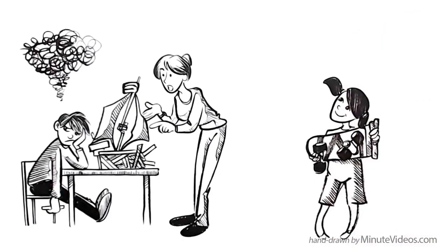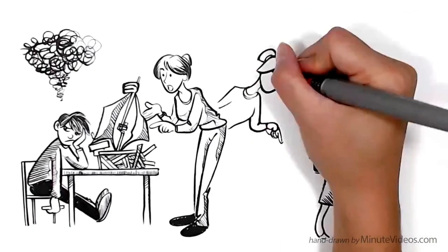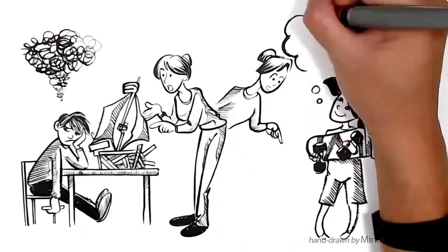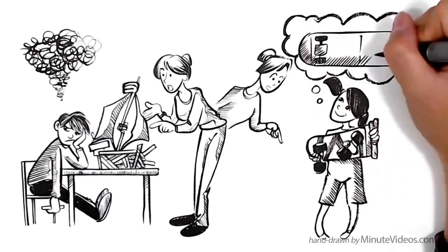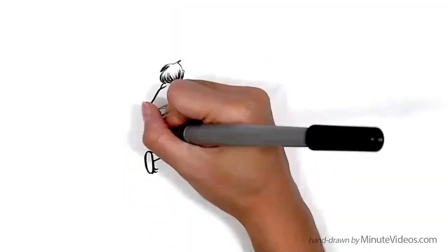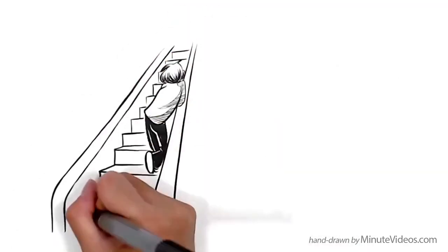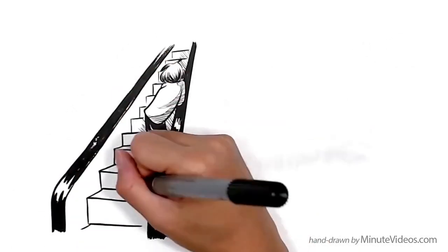Jay always takes the easy road. For example, he likes escalators and hates to take the stairs. When he is practicing the guitar, he stops the moment he's getting stuck.